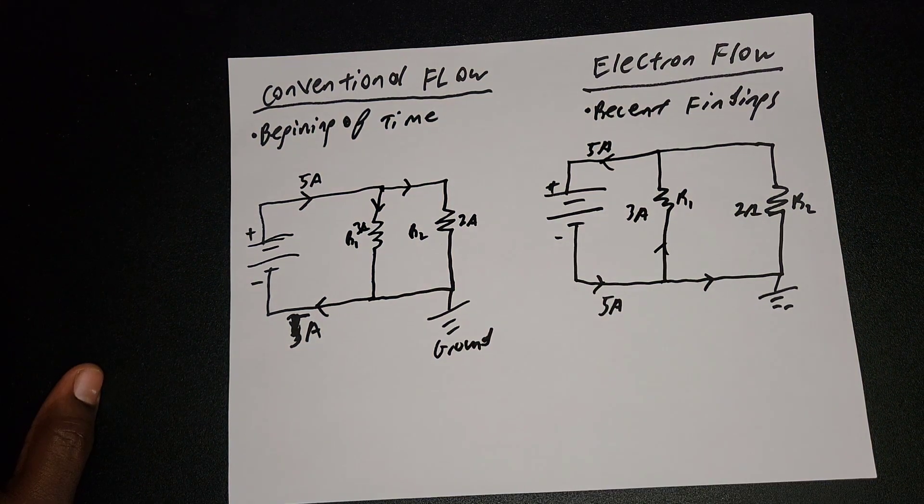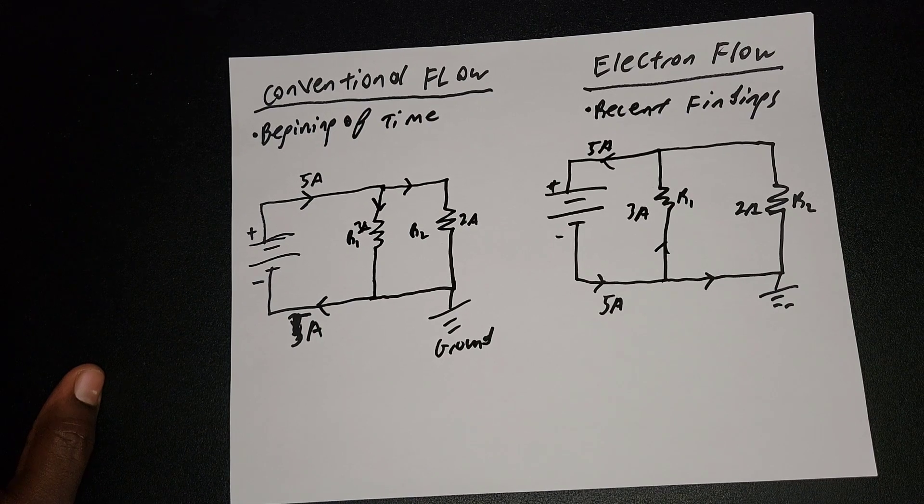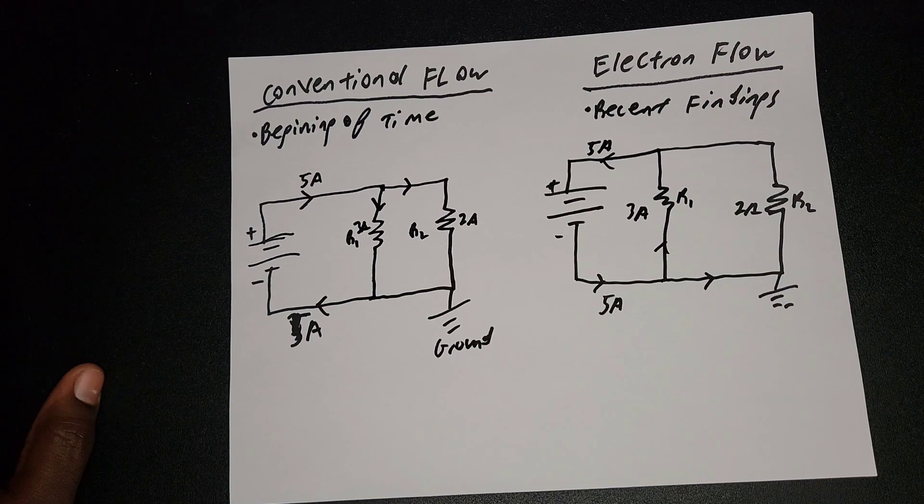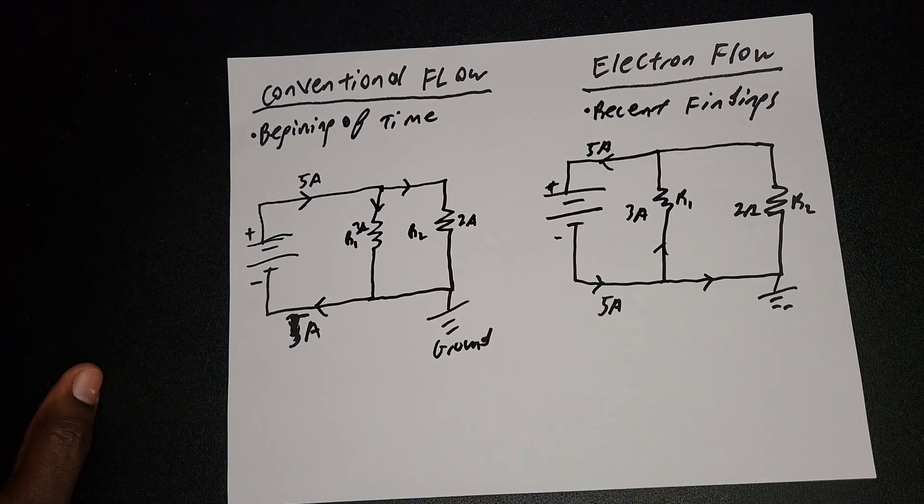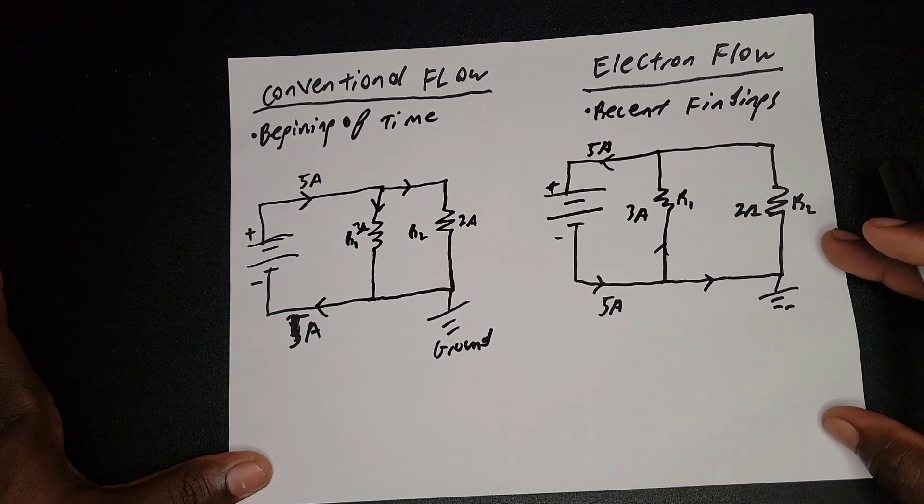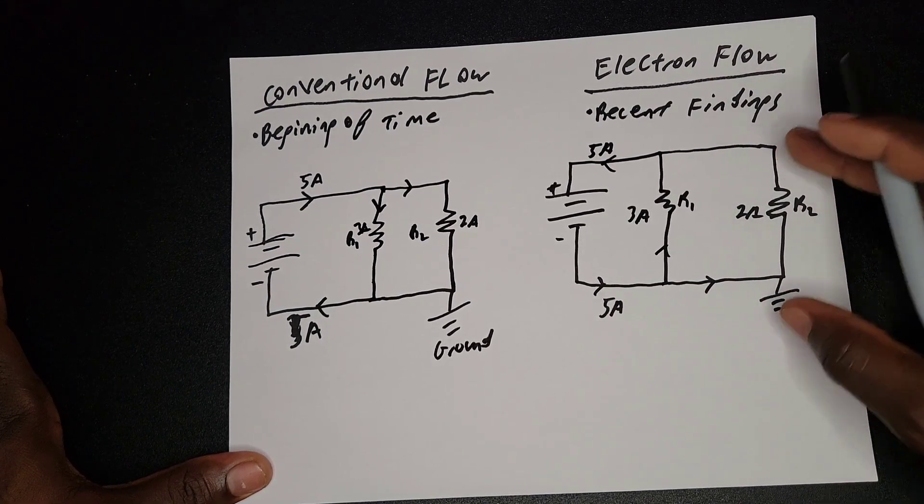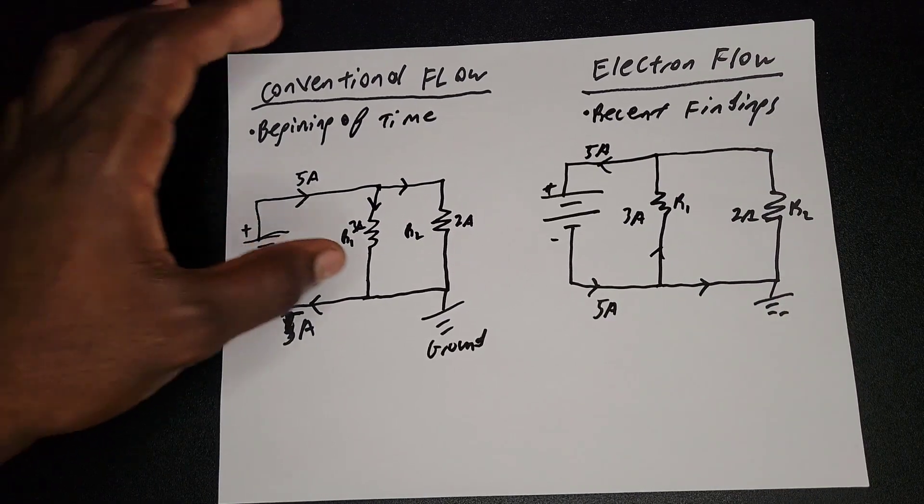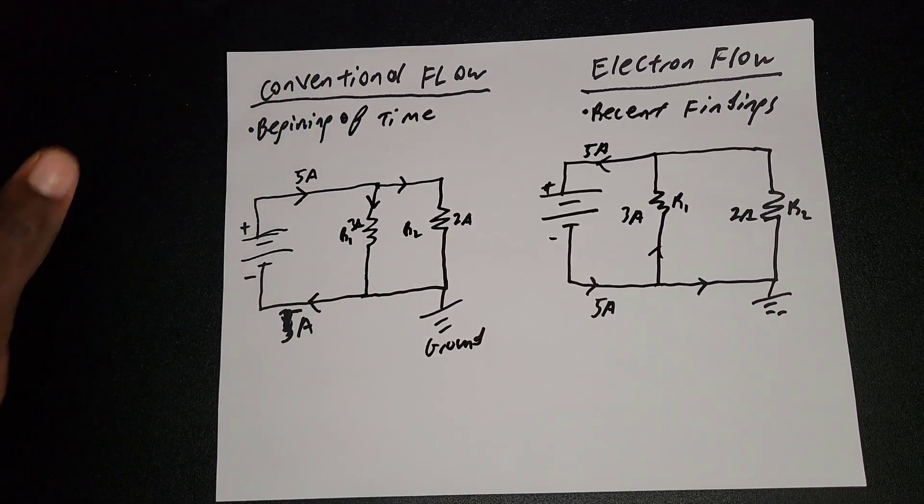So it's up to you just choosing one, whether it may be conventional flow or electron flow, and working with whichever one you find easier to work with. Or if you're currently in school, it is whatever they teach in that class or in that course, that is the one you should work with. I find it better to work with conventional, so I stick with conventional.